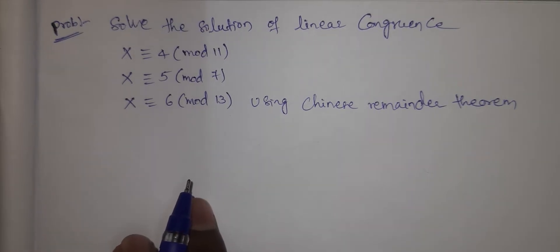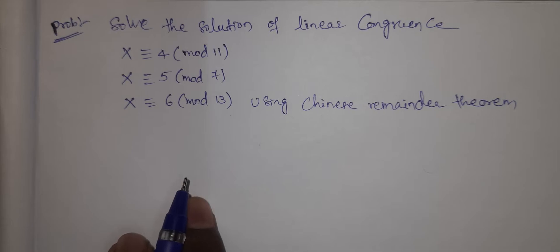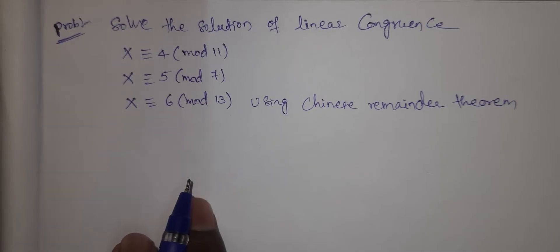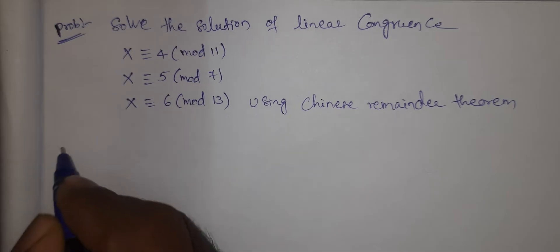Before problem 1 and problem 2, the Chinese Remainder Theorem is clear. The comparison and Chinese Remainder Theorem — right.